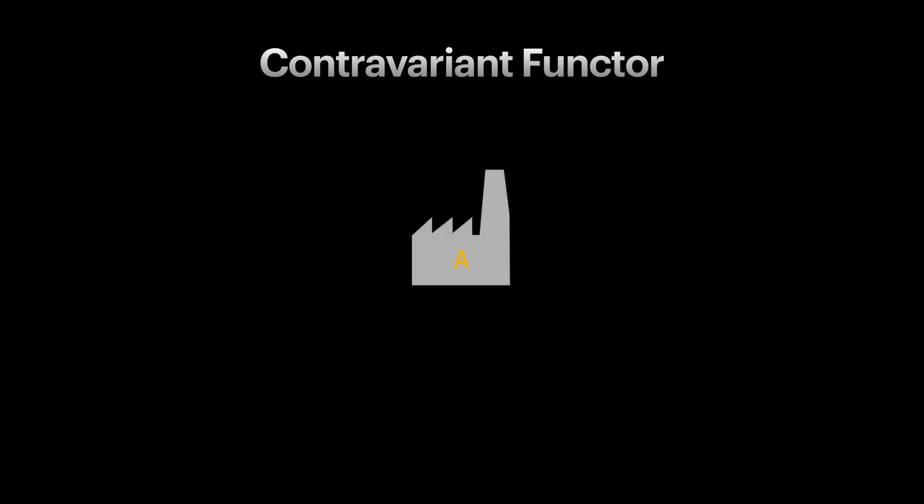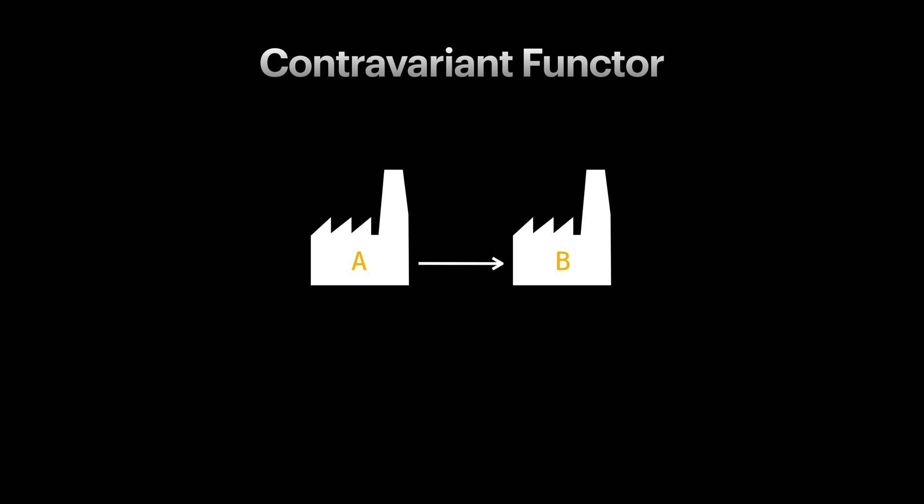Let's look at contravariant functors using our factory analogy. If we look closer at this factory, it looks like instead of producing, a factory is in need or depends on some type A to do its work. Now, if we know how to convert any type like B to A, we can use that to change the factory dependency to B. We can wrap all this logic in a new factory in which our new factory now depends and works with B. We found a systematic way to convert factories just by knowing how to convert their dependencies.